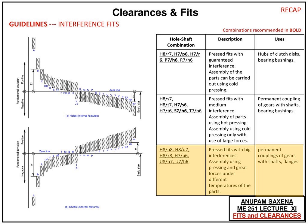These are the different examples of different types of fits. You can see from the type of hole system or shaft system being used, and their actual description. For example, press fits with guaranteed interference will have no clearance; assembly of parts can be carried out using cold pressing. Examples include hubs of clutches and disc bearing bushes. Go to the internet, see images and videos — you'll find plenty on YouTube — to get the idea of what type of fits are being discussed and how they relate to real-life mechanical examples you will see in your department and industry. Thank you.